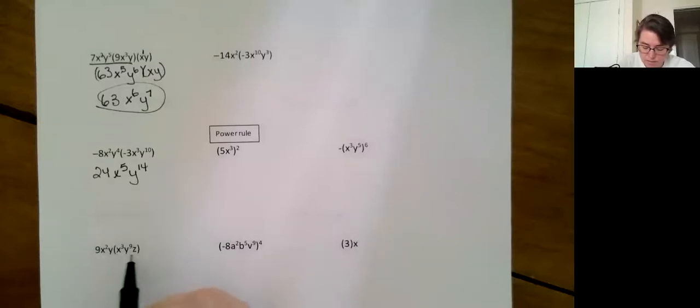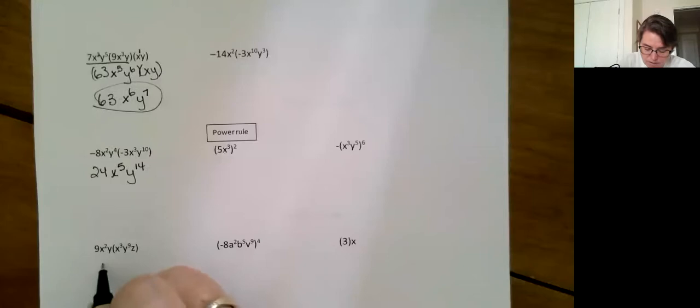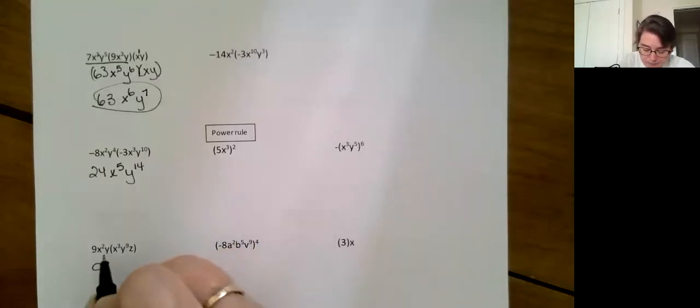Let's finish off this. Nine x squared—there's no more numbers, so no more coefficients. X squared times x to the third is x to the fifth. Y to the third times y to the seventh is y to the tenth. What do we do with the z? There you go.